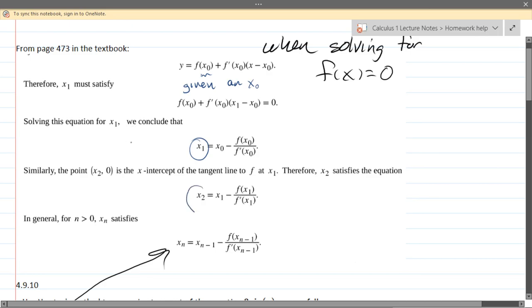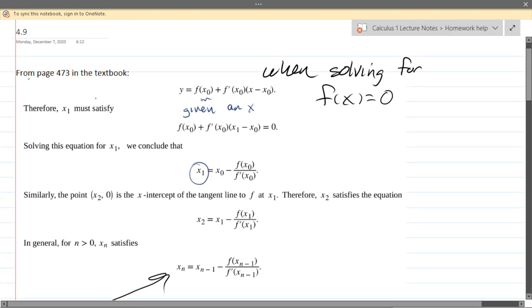So your next better estimate is going to be x2, and it uses the exact same formula, except you see all of these right here, zeros turned into ones. If you have to get a third x value, a better estimation, you're going to get x3, and then all of these ones turned into x2s. And you can keep going and going and going, and you will get a very, very accurate estimate of the x value such that f of x equals 0.